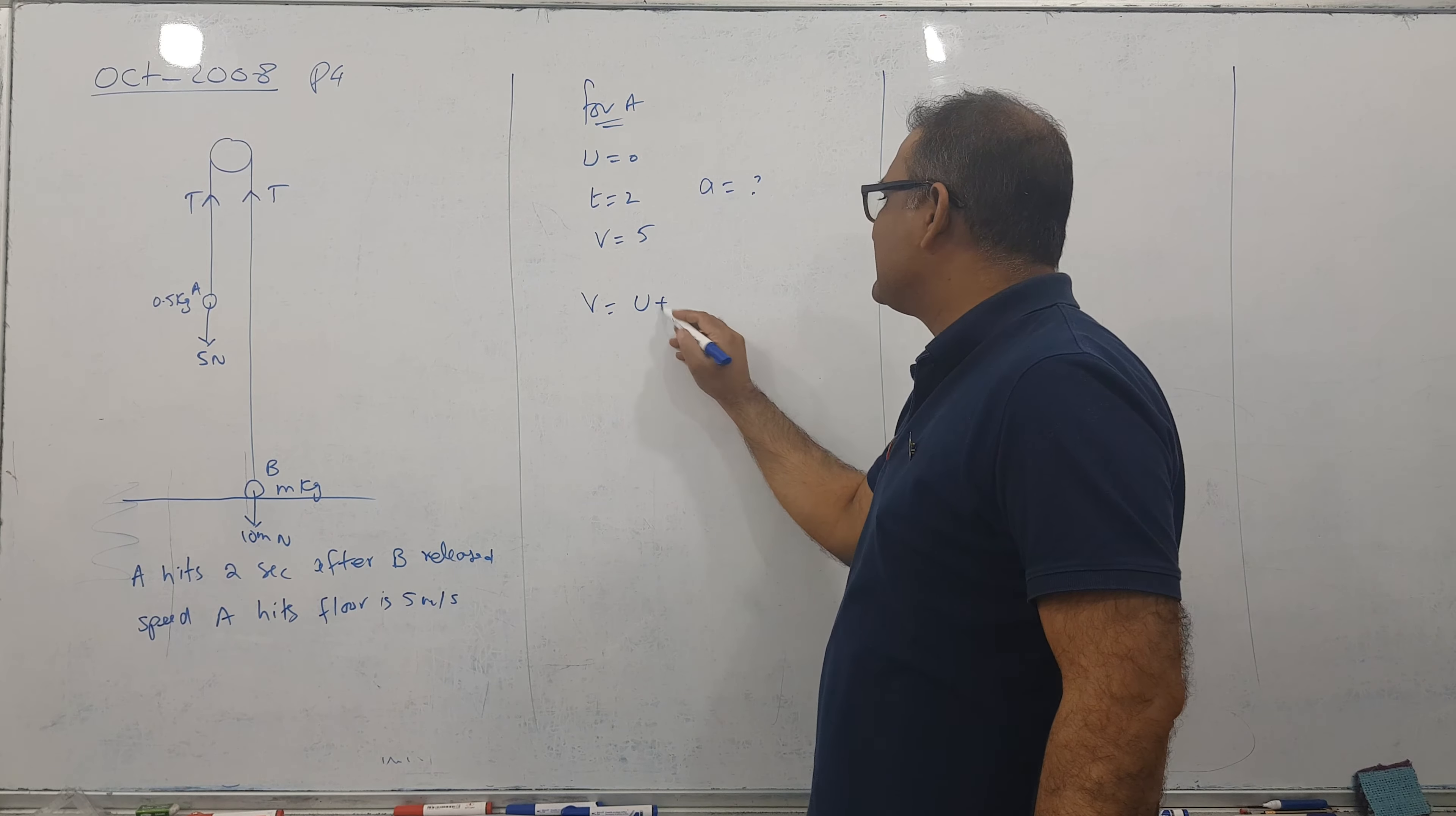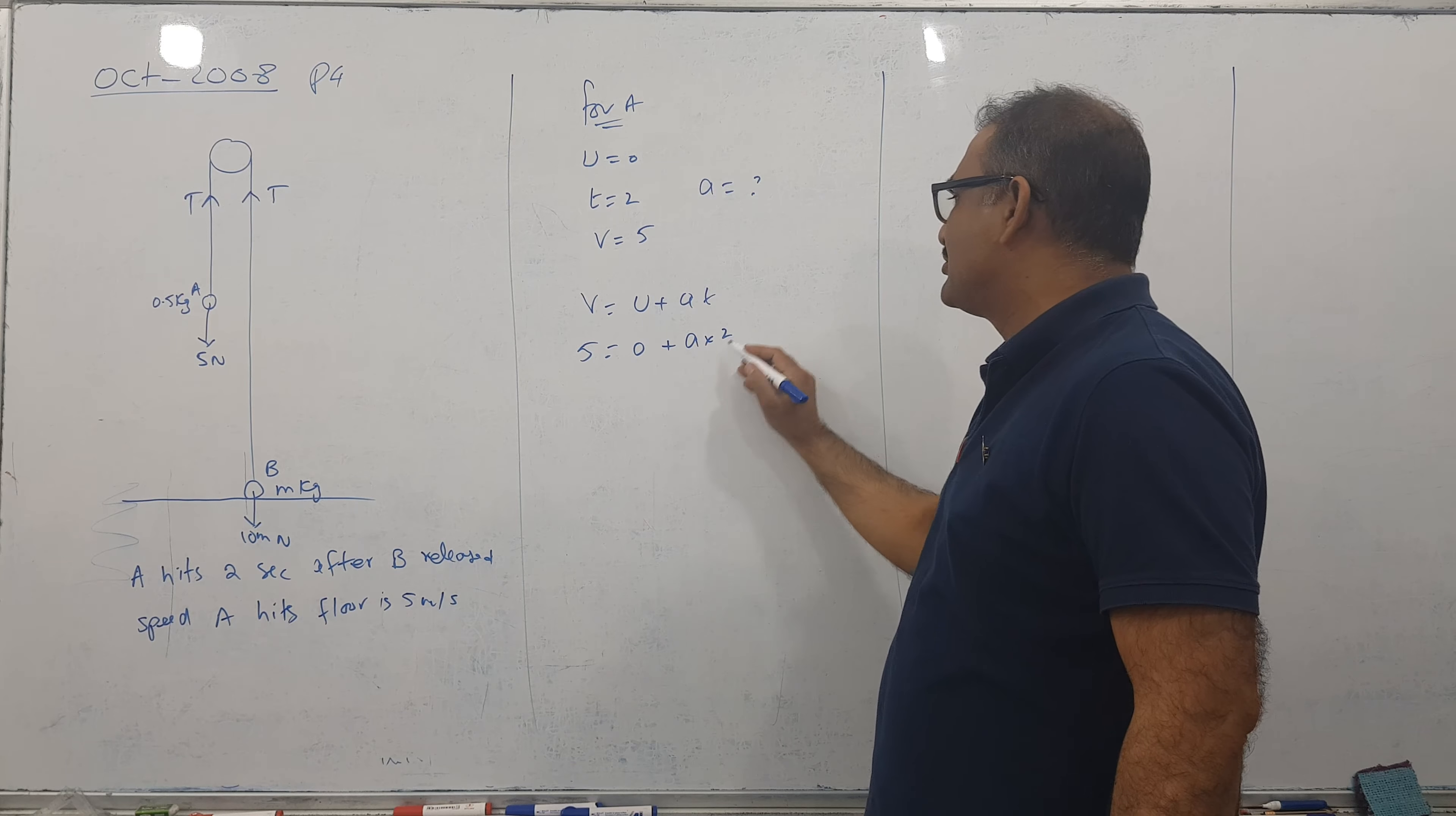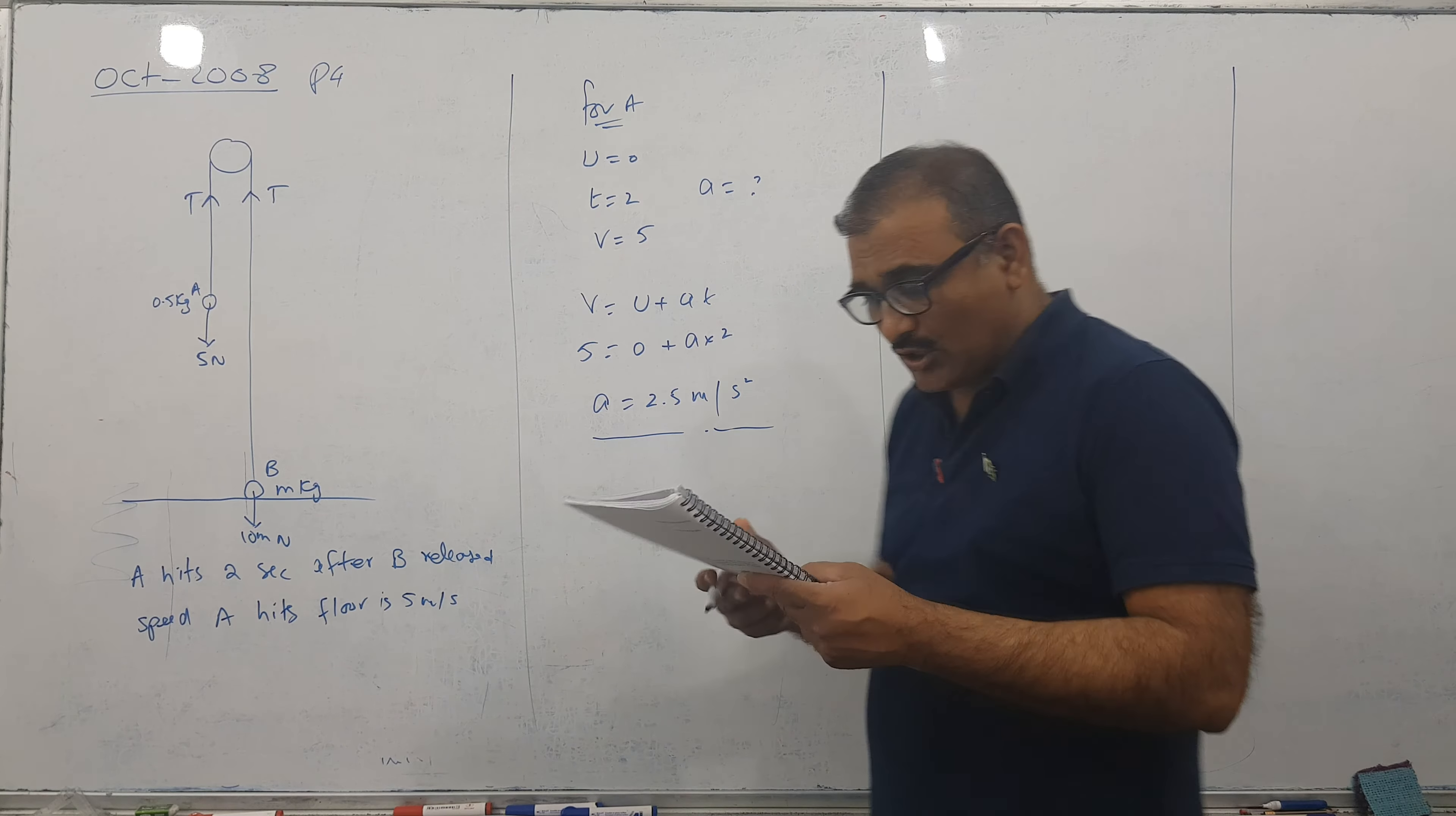V equals U plus at. V is 5, U is 0, and acceleration is my target and time is 2. So a becomes 2.5 meter per second square, so first part is over.